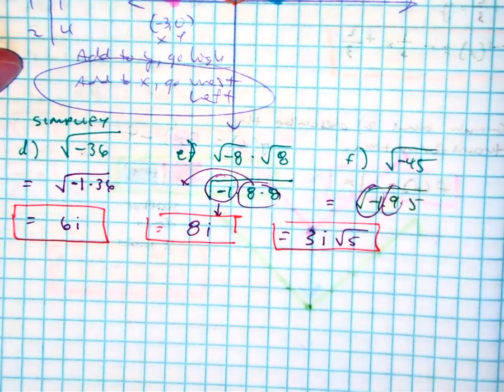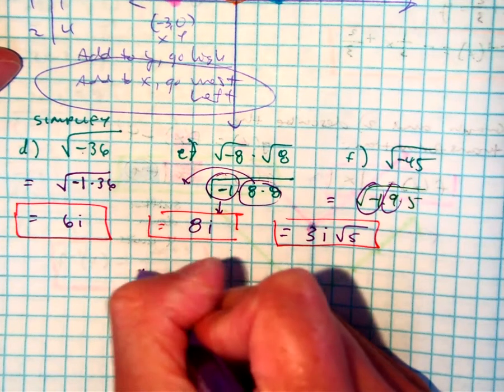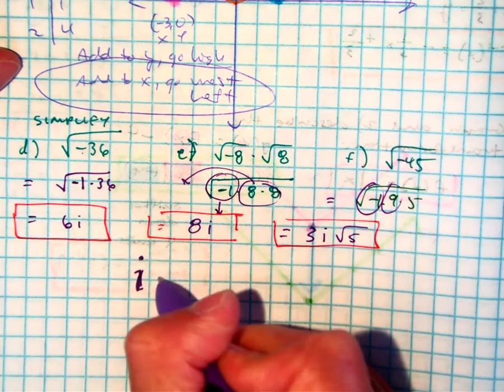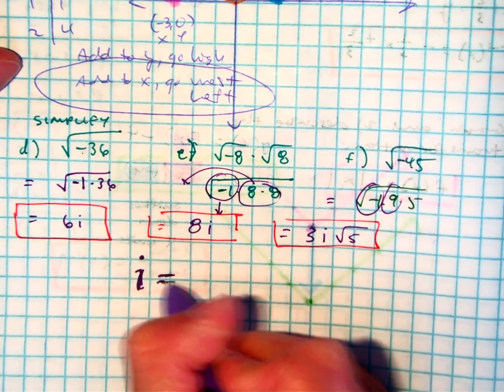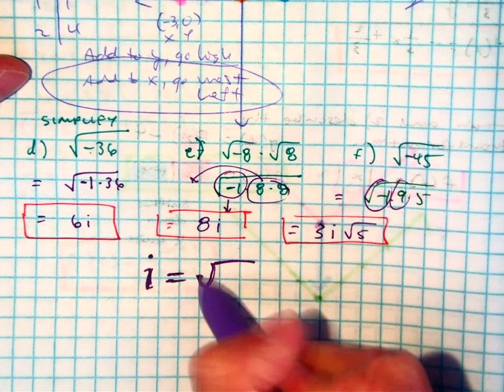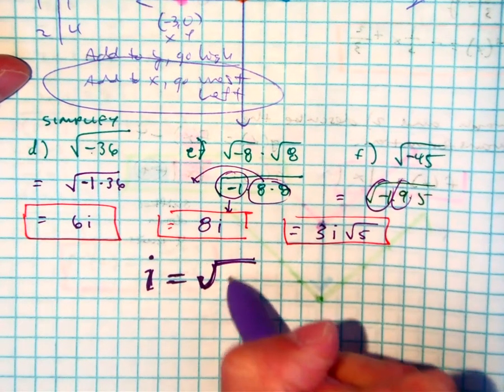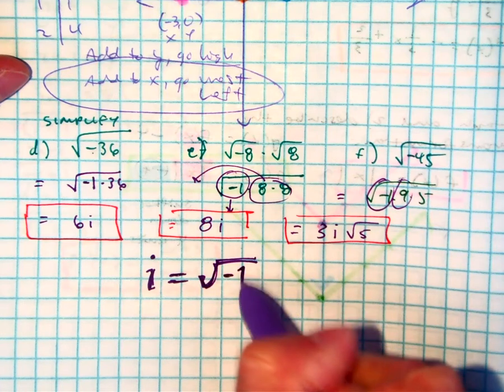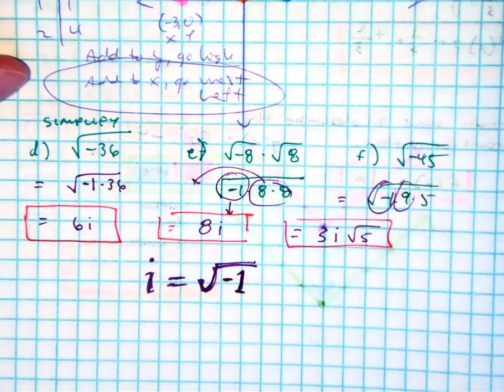So big idea here is that i is equal to the square root, nice and big on your formula sheet, negative 1.